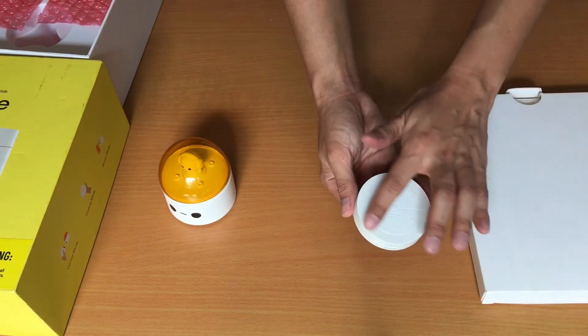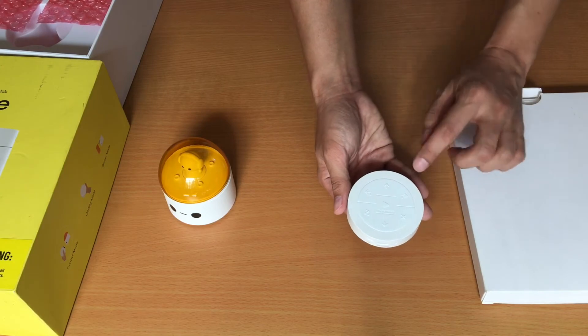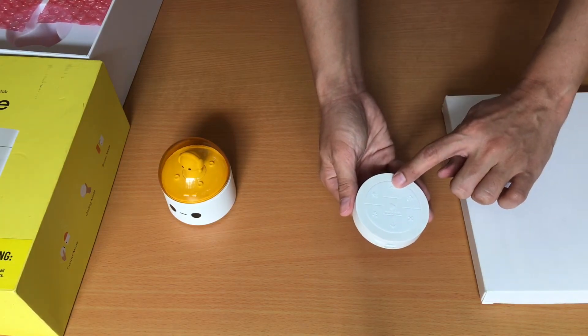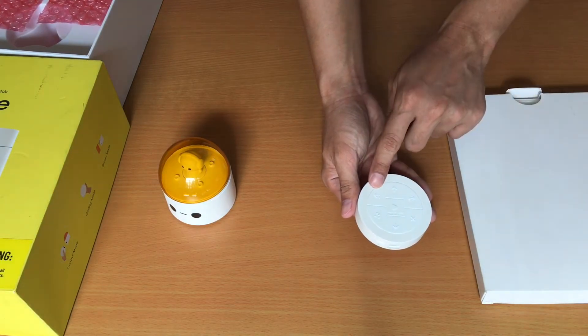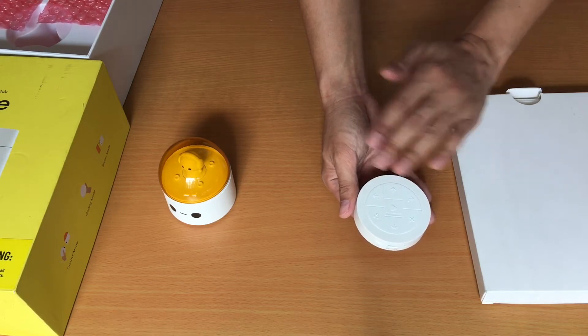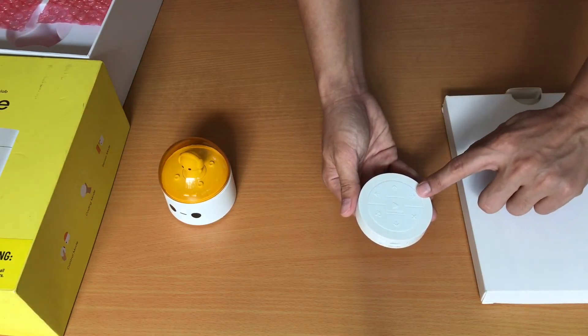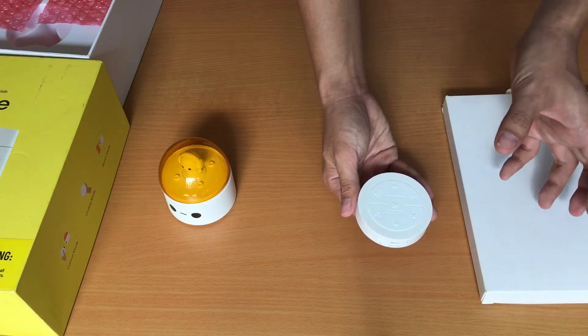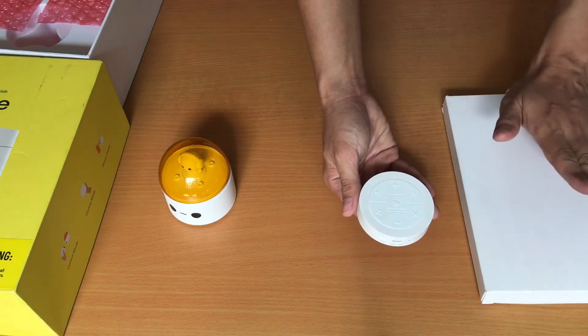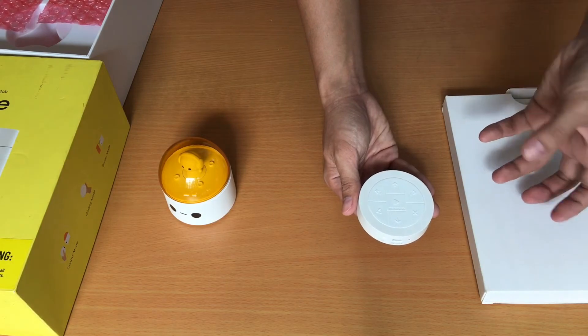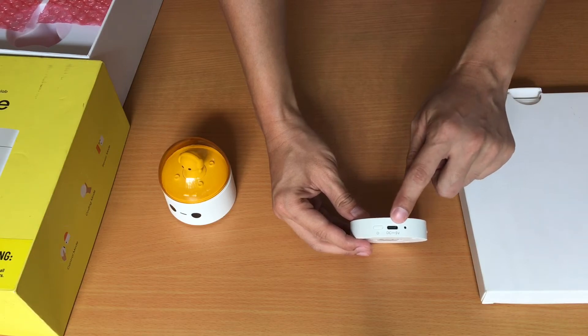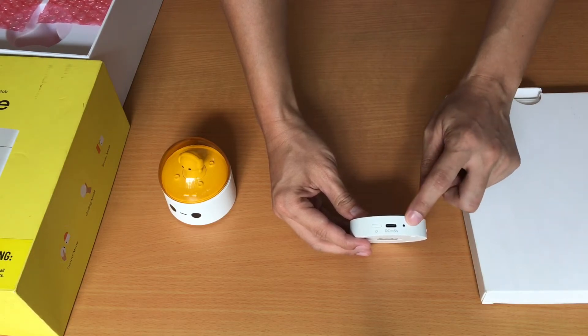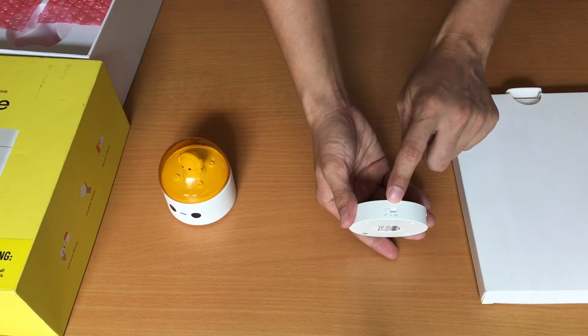For the controller, these are the buttons. The forward button which moves the Matatalabot forward. Backward button which moves the Matatalabot backwards. Left turn button which turns the Matatalabot to the left. It doesn't move forward, it just turns to the left. And turn right button which turns the Matatalabot to the right. Again, it doesn't move forward, it just turns the Matatalabot to the right. It also has a power button, USB-C port charger, LED light indicator and the mode switches.